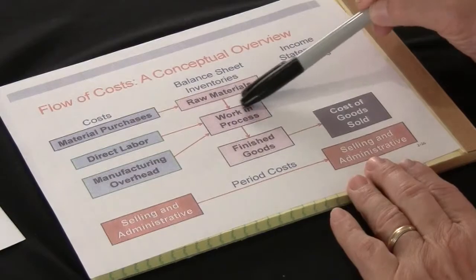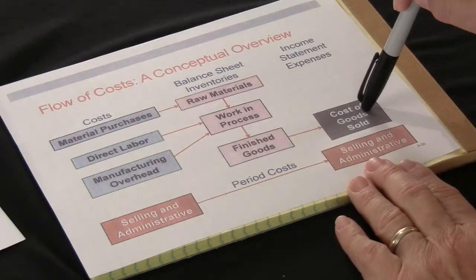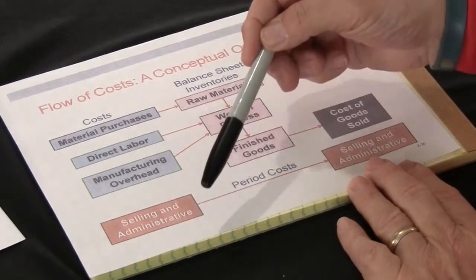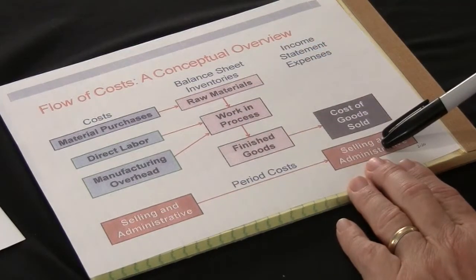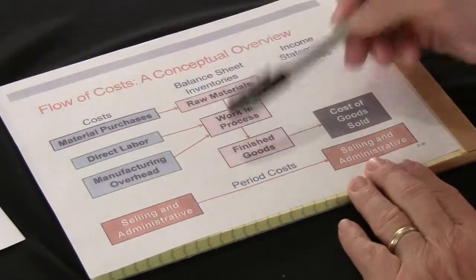In work in process we add direct labor and manufacturing overhead, collecting costs as we convert raw material into a finished product. Raw material inventory represents the sum total of all material ledger cards, and work in process at any point in time equals the sum total of all the job cost summary sheets in process. Once a job is complete, the products go into finished goods, where they remain on the balance sheet until sold. When sold, they come out of finished goods and hit cost of goods sold, where they are expensed. Selling, admin, HR, finance, legal, and all other non-manufacturing costs are period costs and hit the income statement when incurred.